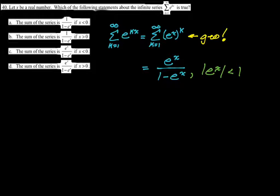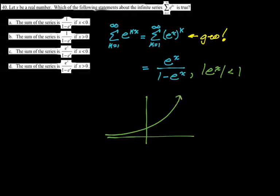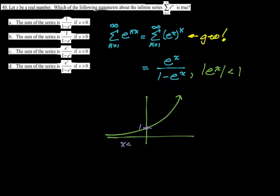I'm going to figure out where e^X is less than 1 graphically. A graph of e^X has a y-intercept of 1. So e^X is less than 1 when X is less than 0. So my answer is C.